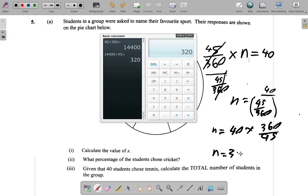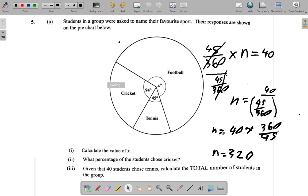It's 320. Which suggests that that's the total number of students in the group. Total of 320.